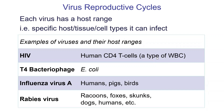Some viruses are just really very promiscuous. The rabies virus is a good example — pretty much if you are a mammal, you can get rabies. It doesn't mean you will; it just means you could if you get bitten by somebody who has rabies.